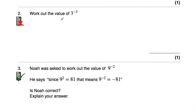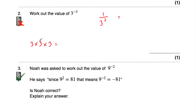Question 2: work out the value of 3 to the power of negative 3. We've got a negative power, so we do 1 over the positive power — 1 over 3 cubed. 3 cubed is 3 times 3 times 3: 3 times 3 is 9, times 3 is 27. So the answer is 1 over 27.